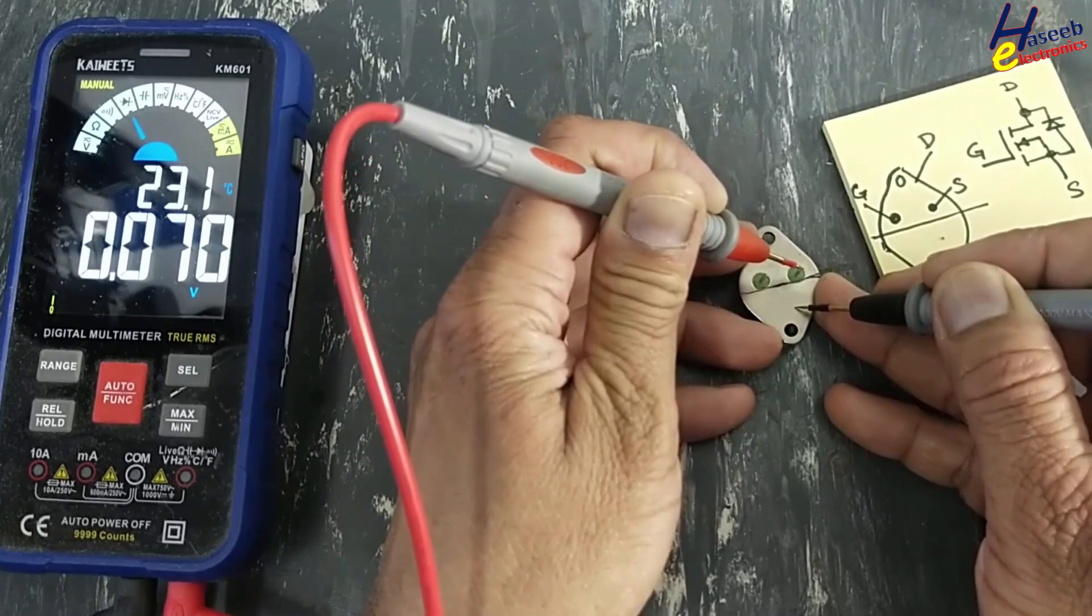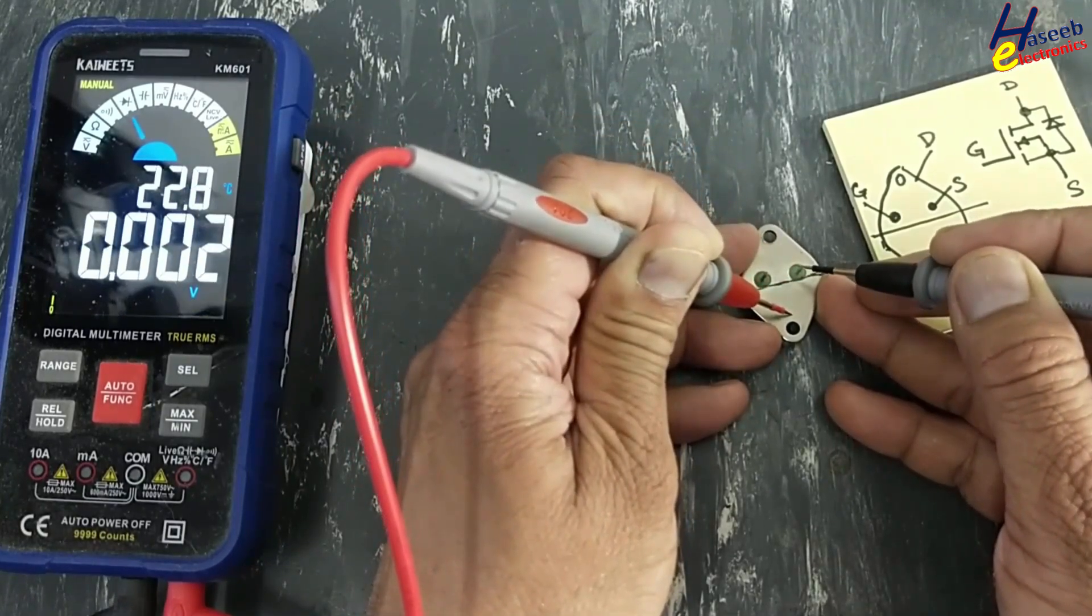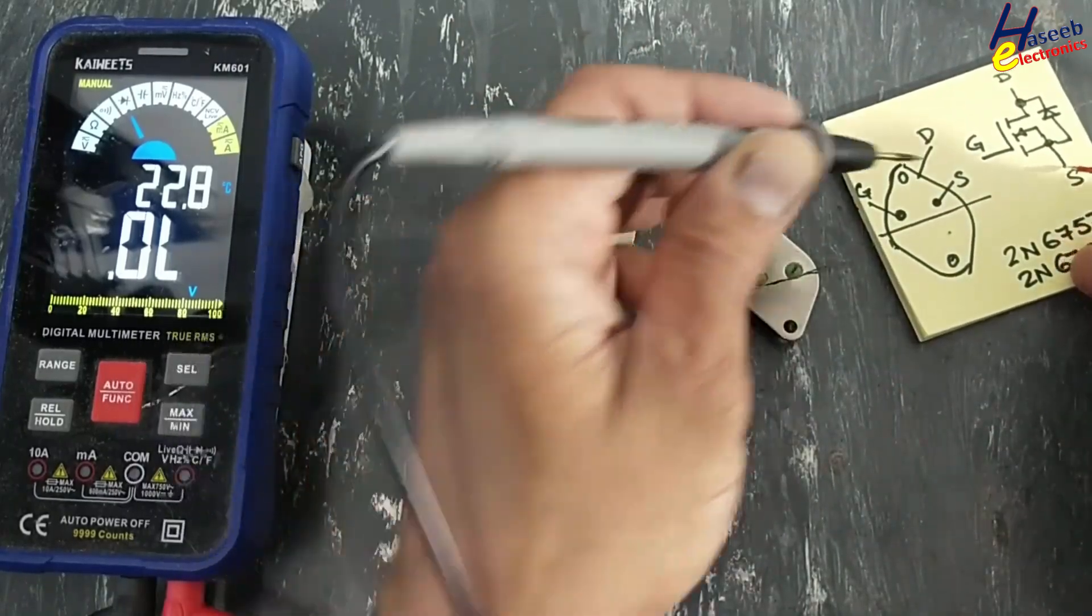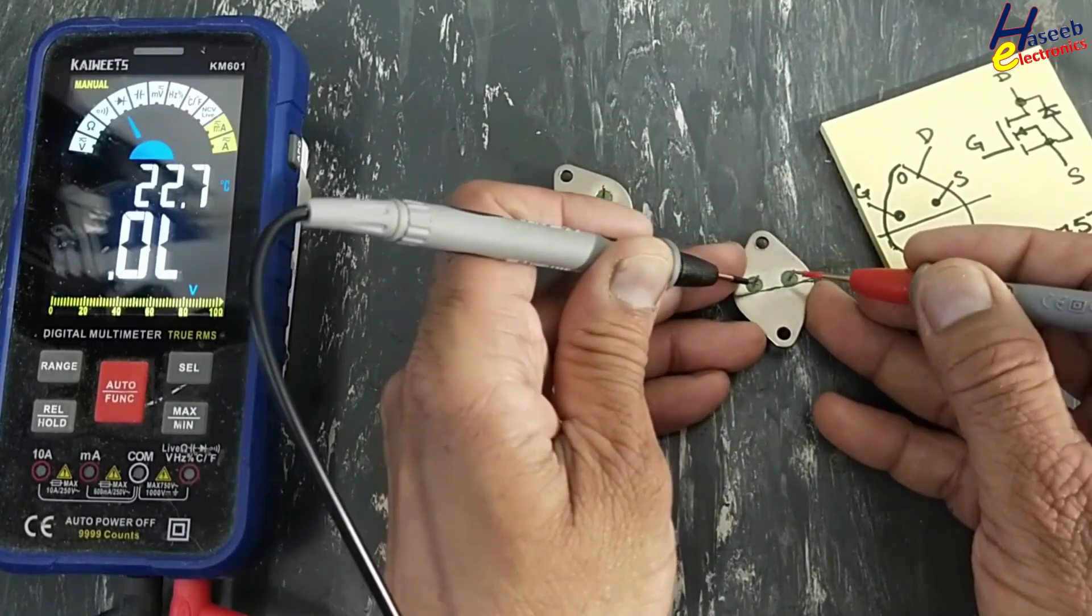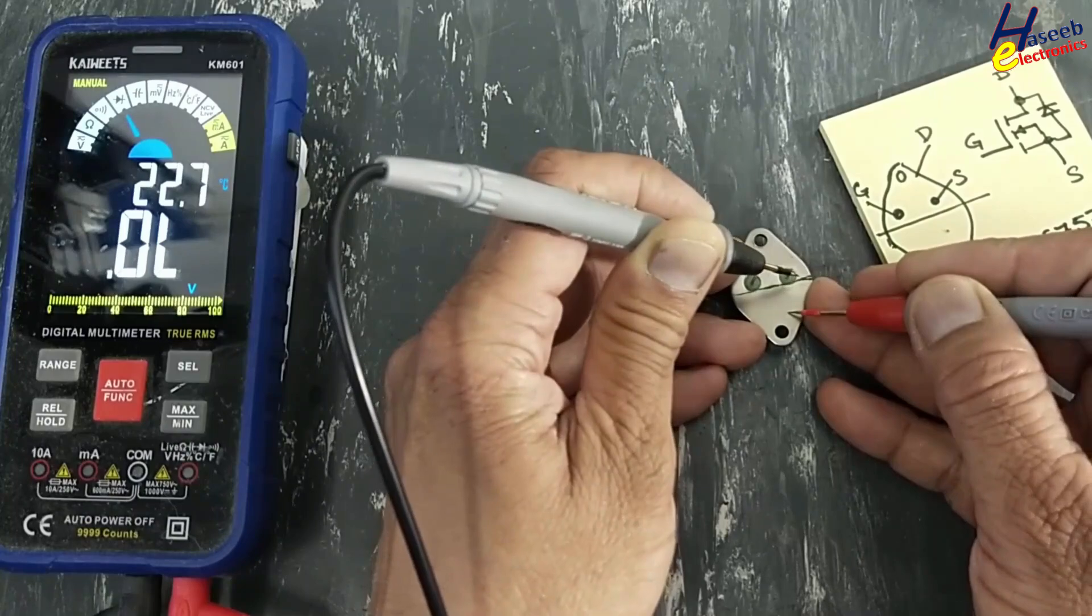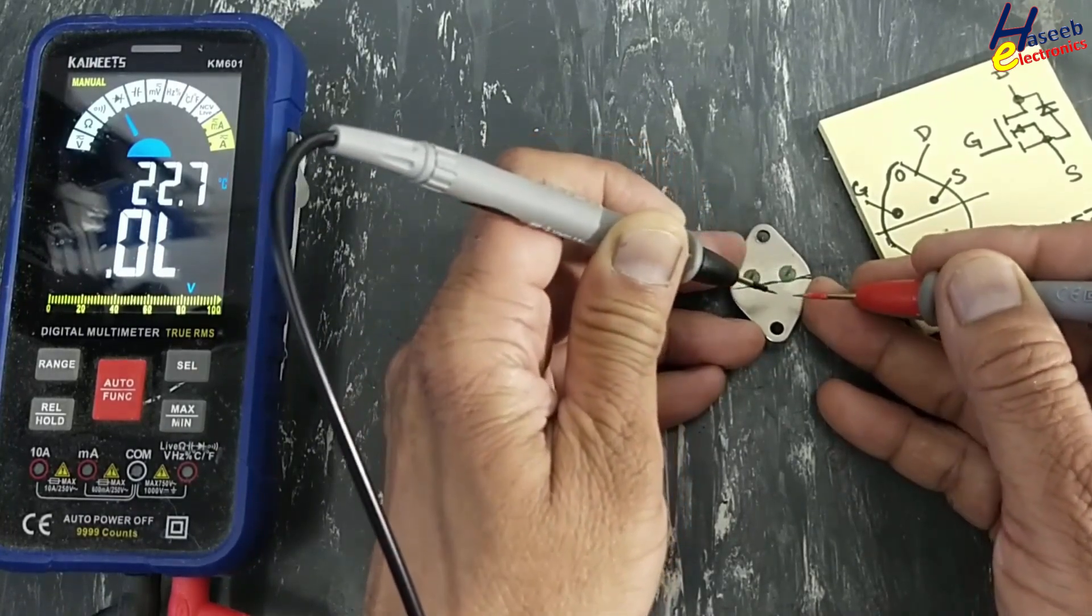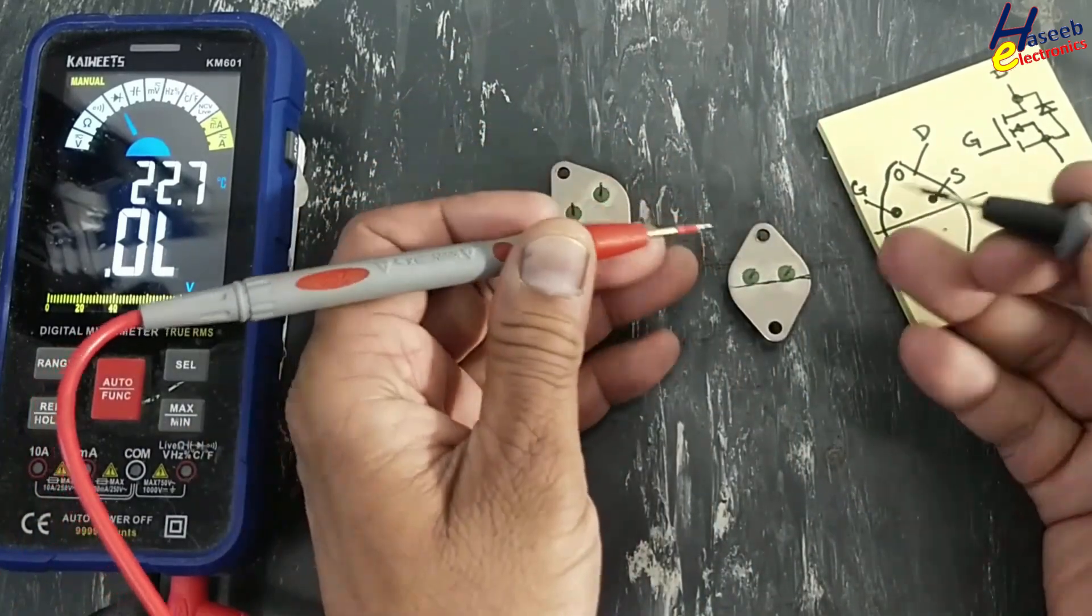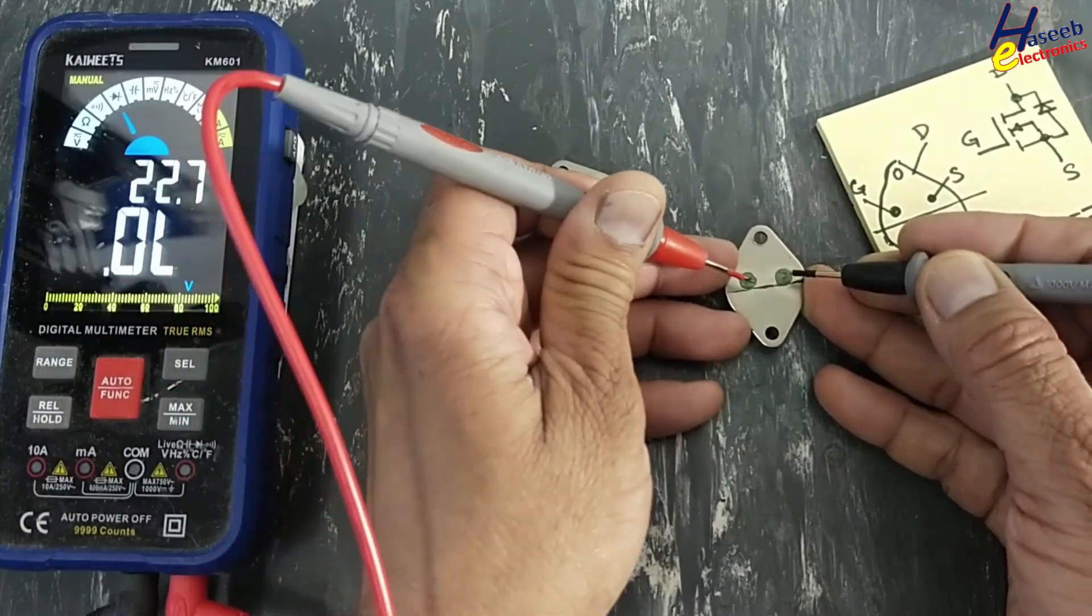Now red lead at source, black lead at gate - we will discharge the gate. Now diode shows open circuit. Let's repeat the test. Black lead at source pin, red lead at gate.